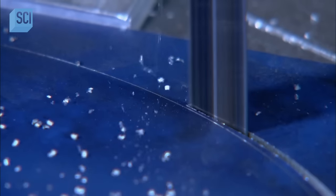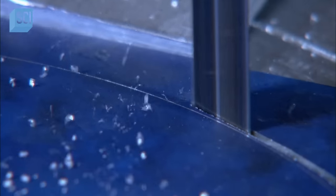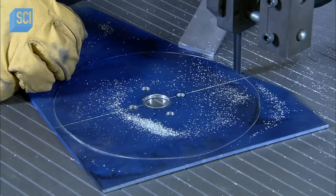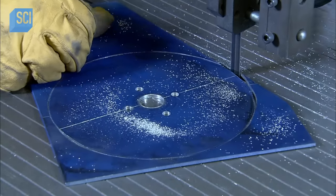He then cuts out the disc following the penciled lines. He smooths the rough edges using a fine-grit abrasive belt.